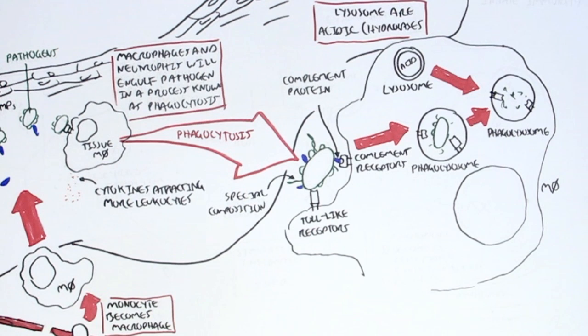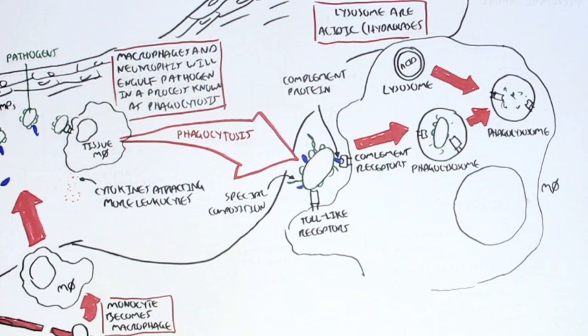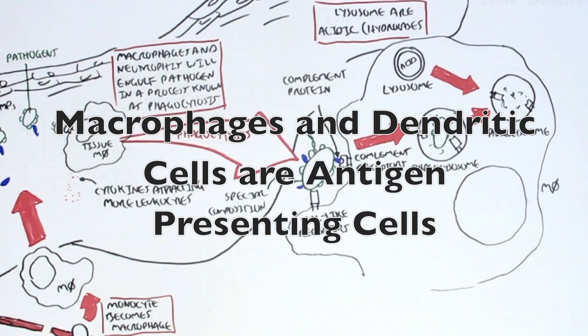Now what good is this? The macrophage can actually now take the antigen and express it on its cell surface through an MHC receptor. Therefore, a macrophage is known as an antigen-presenting cell. With this, the macrophage can also stimulate the adaptive immune cells within the lymph node. This is exactly the same as a dendritic cell. The dendritic cell is also an antigen-presenting cell.